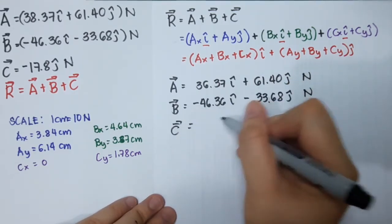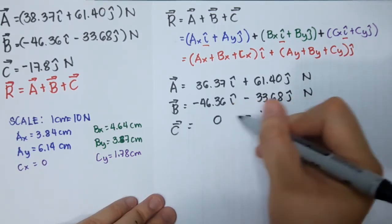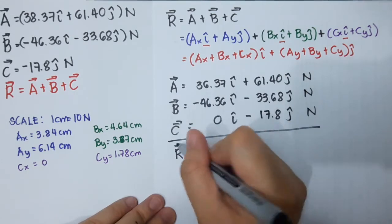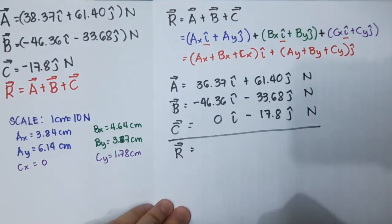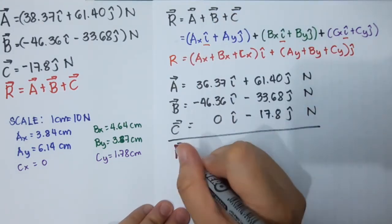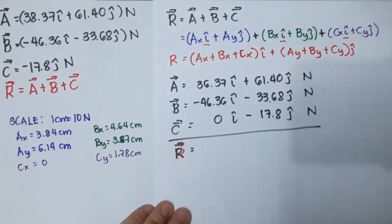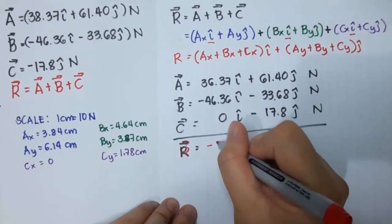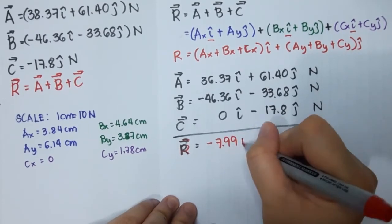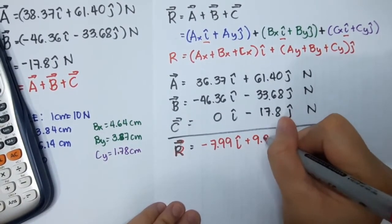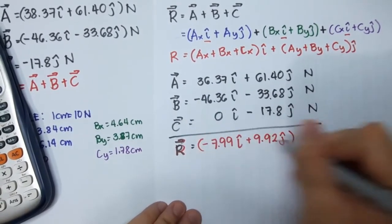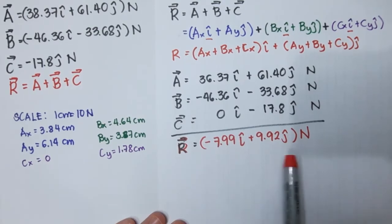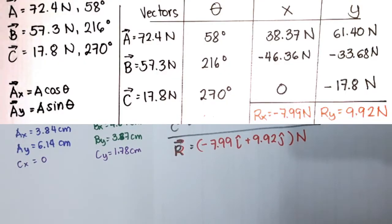Going back to our problem, we will just add all the corresponding components. For vector C there is no x-component, so cx equals zero — you can put zero so you won't be confused. Solving for R, as I said it is much easier to find the resultant when vectors are in unit vector form. The answer is R = -7.99·î + 9.92·ĵ newtons, which matches the rx and ry components from our previous problem.